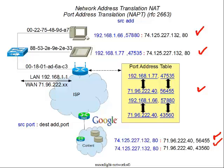Both NAT and PAT have limitations. Some applications do not work well across either, but PAT can be particularly problematic. Applications like Voice over IP may embed the IP address in the application layer, and most routers doing simple NAT/PAT translation are not sophisticated enough to inspect the application layer. There is a technology called an Application Level Gateway (ALG) that handles this, but it's complex and unlikely to be found in most home networks. These are great techniques for simple web requests, but they do have their limitations.